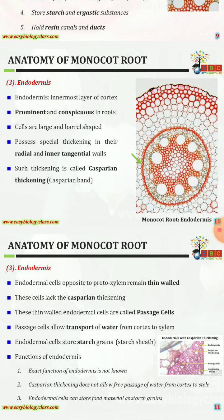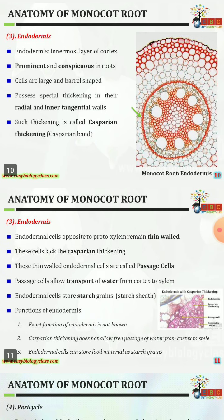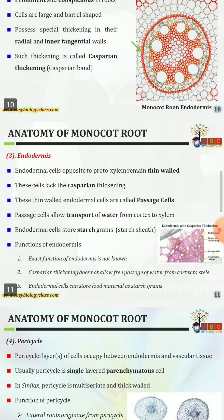The third part is the endodermis, the innermost layer of the cortex. It is prominent and conspicuous in roots. Cells are large and barrel-shaped, and possess special thickening in the radial and inner tangential walls. Such thickening is called casparian thickening or casparian bands.